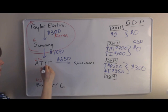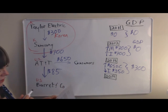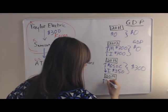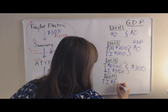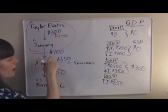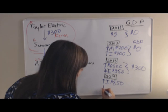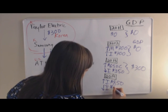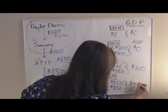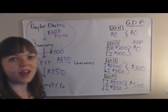In 2014, AT&T sells to Barrett & Company for $850. We have an increase in investment of $850 for Barrett & Company. We also need to ask whether we need a decrease in inventory for AT&T. Since we already accounted for some of that value in the $700 worth of imports, we do need a decrease in inventories of half of that, which is $350. Therefore, GDP in 2014 is $500. And that's the problem.